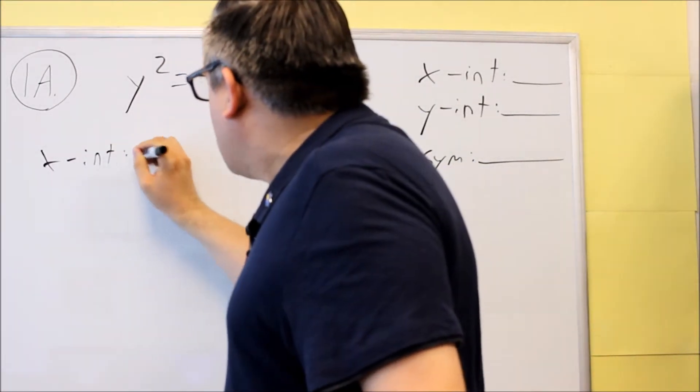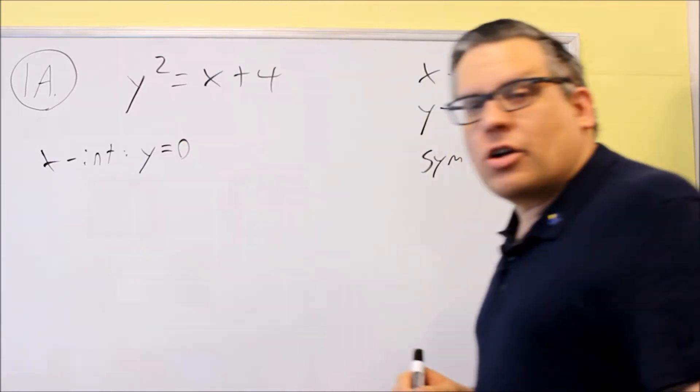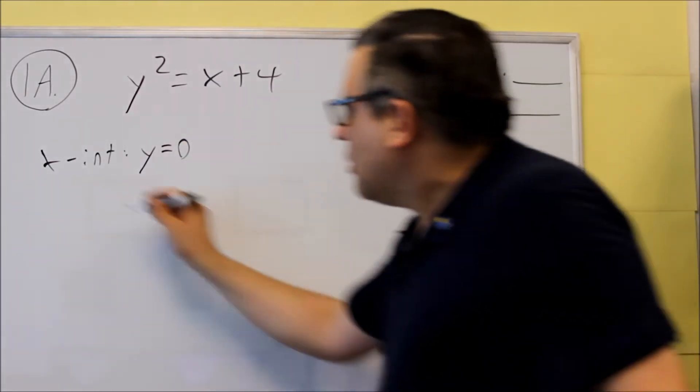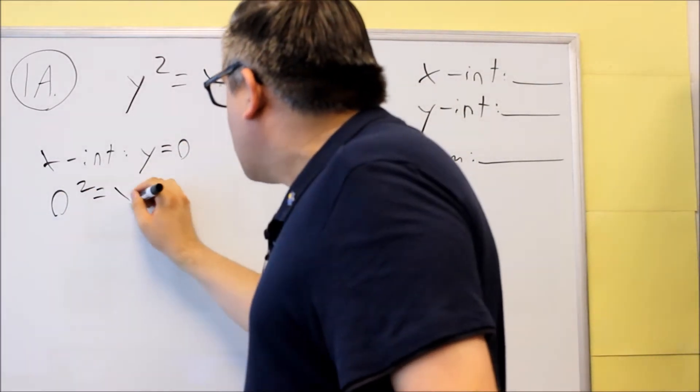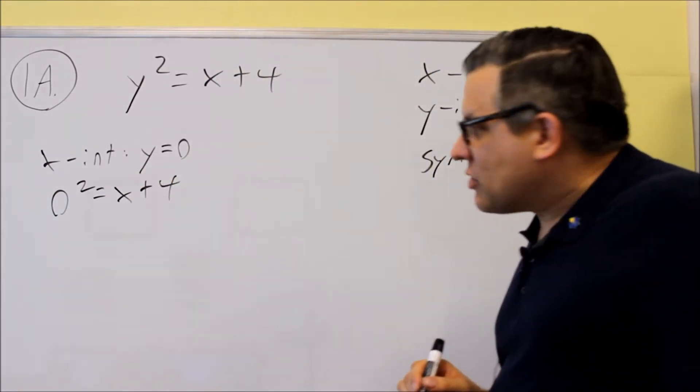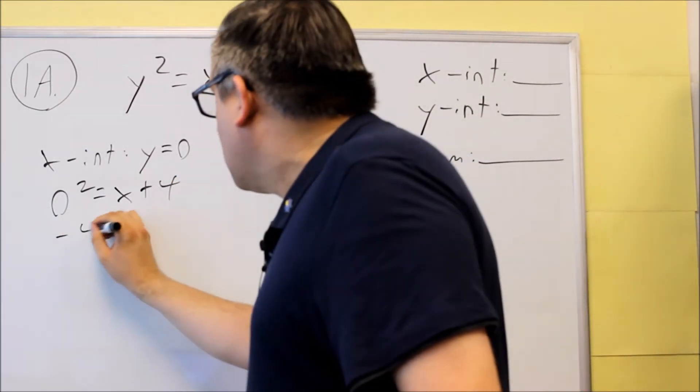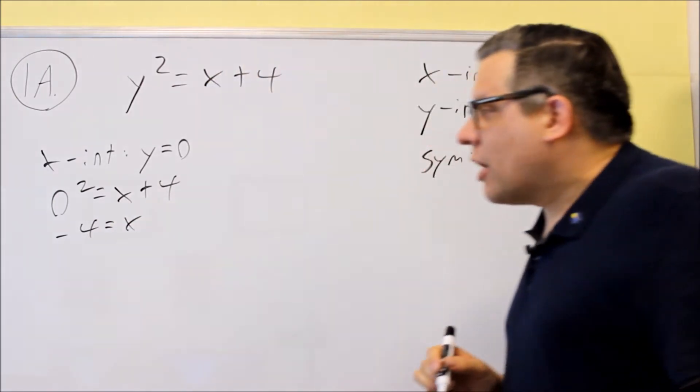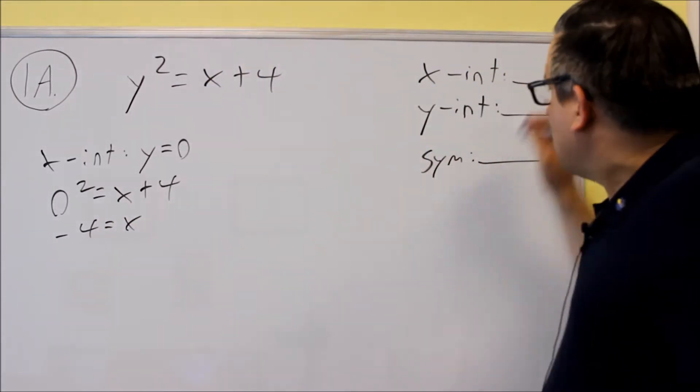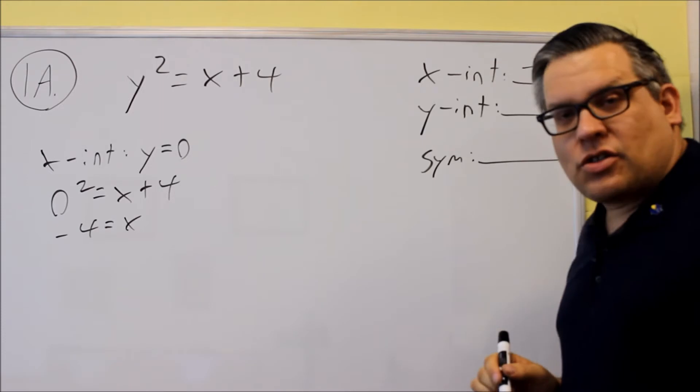So for the x-intercept, the steps are you're going to put in a 0 for y, so we have 0 squared equals x plus 4. And when we solve for that, bring the negative 4 over, we get the x-intercept is equal to negative 4. So we just have one x-intercept.